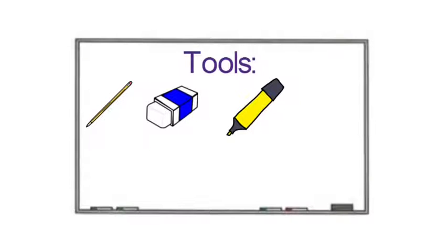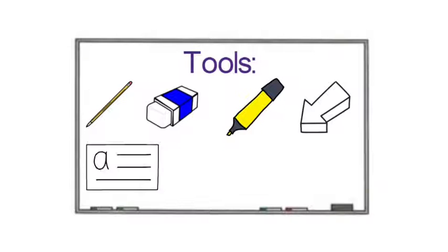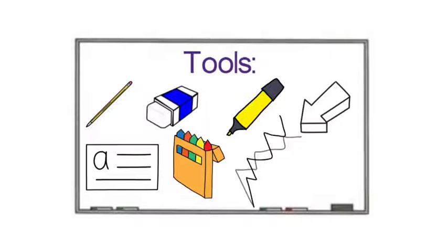Whiteboards have all or some of the following tools: pencil, eraser, highlighter, pointer, text, color, lines, and shapes.